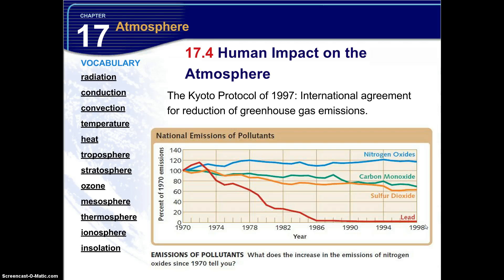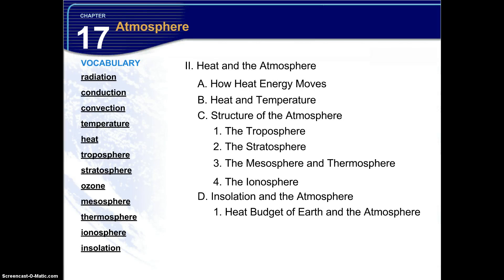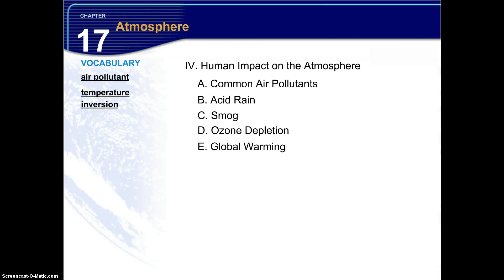As a quick overview, here is a brief outline of Chapter 17. Section 1 covered the atmosphere in balance — composition of the atmosphere, recycling of atmospheric materials, and the balance. Section 2 covered heat in the atmosphere — how heat moves, heat versus temperature, structure of the atmosphere, insulation in the atmosphere, and Earth's heat budget. Section 3 covered local temperature variations — the intensity of insulation and factors that influence it, heating of water and land, and temperature maps. The final section covered human impact on the atmosphere — common air pollutants, acid rain, smog, ozone depletion, and global warming.